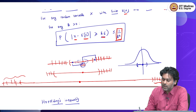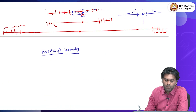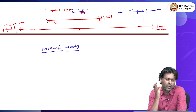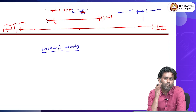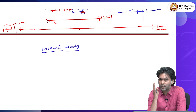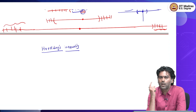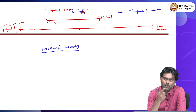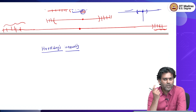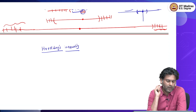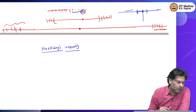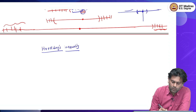The mean is like a typical value. Typically, if you want to take a guess, you will take the average as the guess. How much around the average do you expect to find the values is what these concentration inequalities give us an idea about.